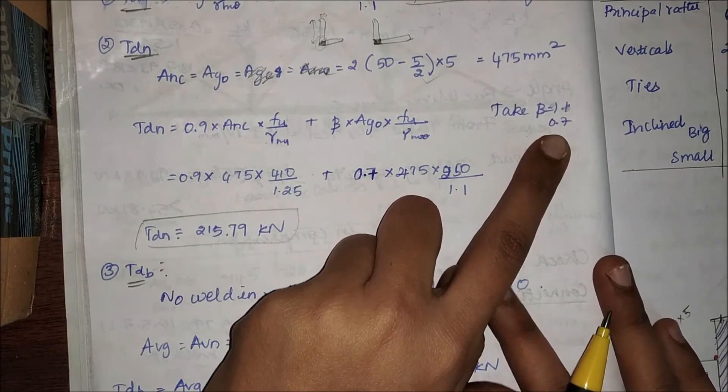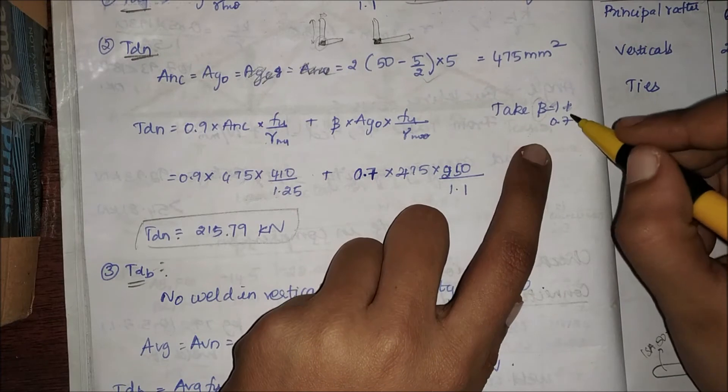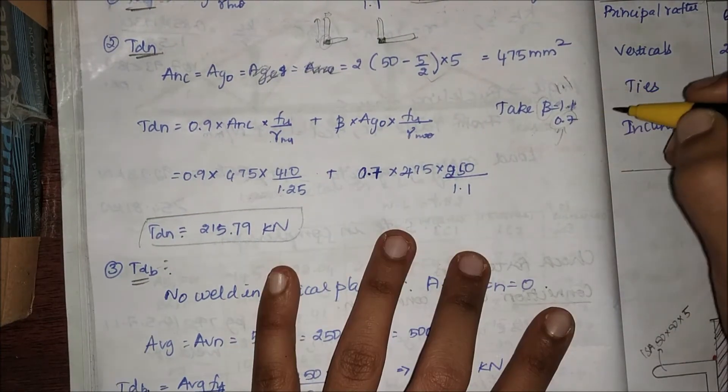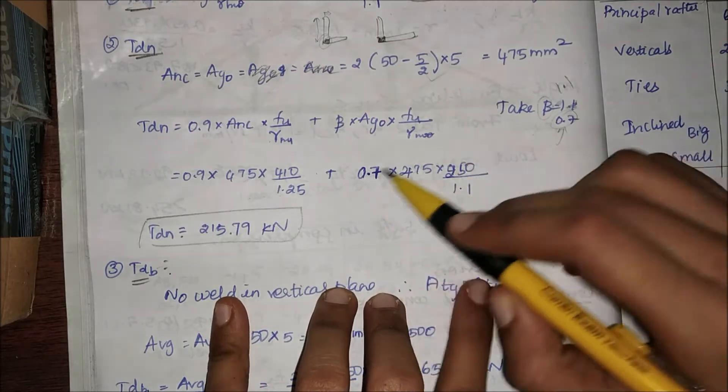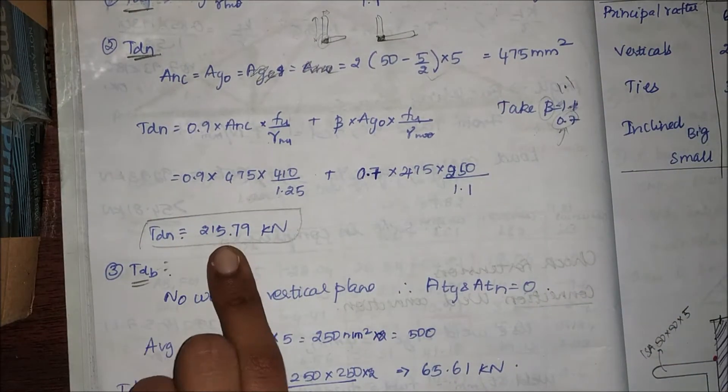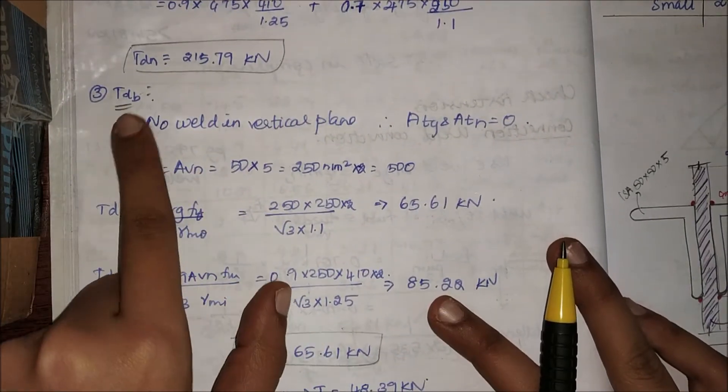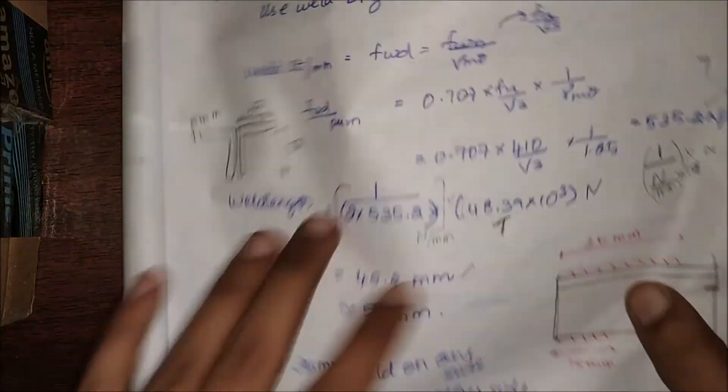I'm just checking here; I'm not going to find the actual tensile strength. When I multiply, I'll get Tdn equal to 215.79 kN.